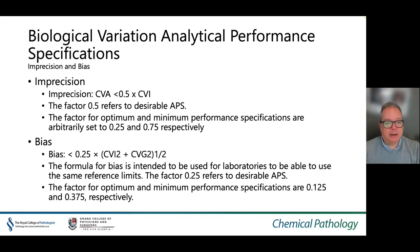Bias specifications can be set at less than 0.25 times the square root of the sum of the squares of CVI and CVG. The formula for bias is intended to allow laboratories to use the same reference limits. The factor 0.25 refers to the desirable analytical performance specification, and the factors for optimum and minimum performance specifications are 0.125 and 0.375 respectively. The choice of which factor to use depends on the intended use.